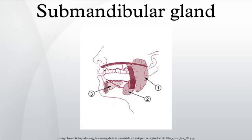Lobes contain smaller lobules, which contain adenomeres — the secretory units of the gland. Each adenomere contains one or more acini, or alveoli, which are small clusters of cells that secrete their products into a duct. The acini of each adenomere are composed of either serous or mucous cells, with serous adenomeres predominating.